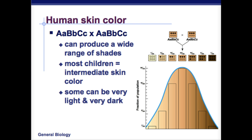For example, human skin color — depending on how many of the genes you have present — determines how light or dark your skin is. So it forms a bell curve and gives you a wide range of skin tones.